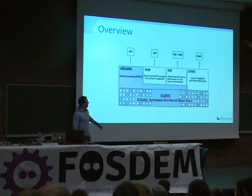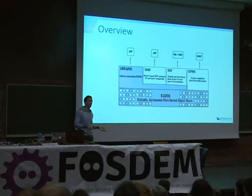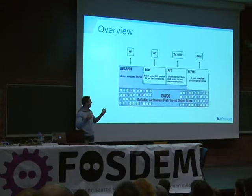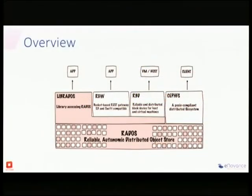The second component is called RADOS Gateway — it's a RESTful API, the exact same thing as Amazon S3 and OpenStack Swift. It has support for users, quotas, multi-region capabilities, geo-replication, and it's compatible with DR processes.